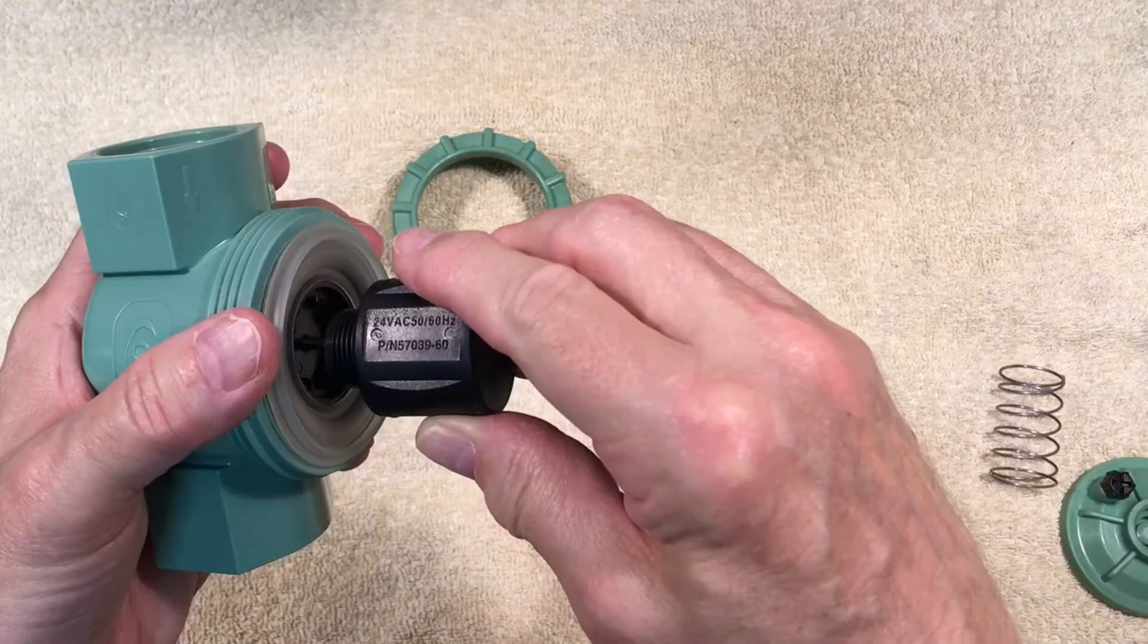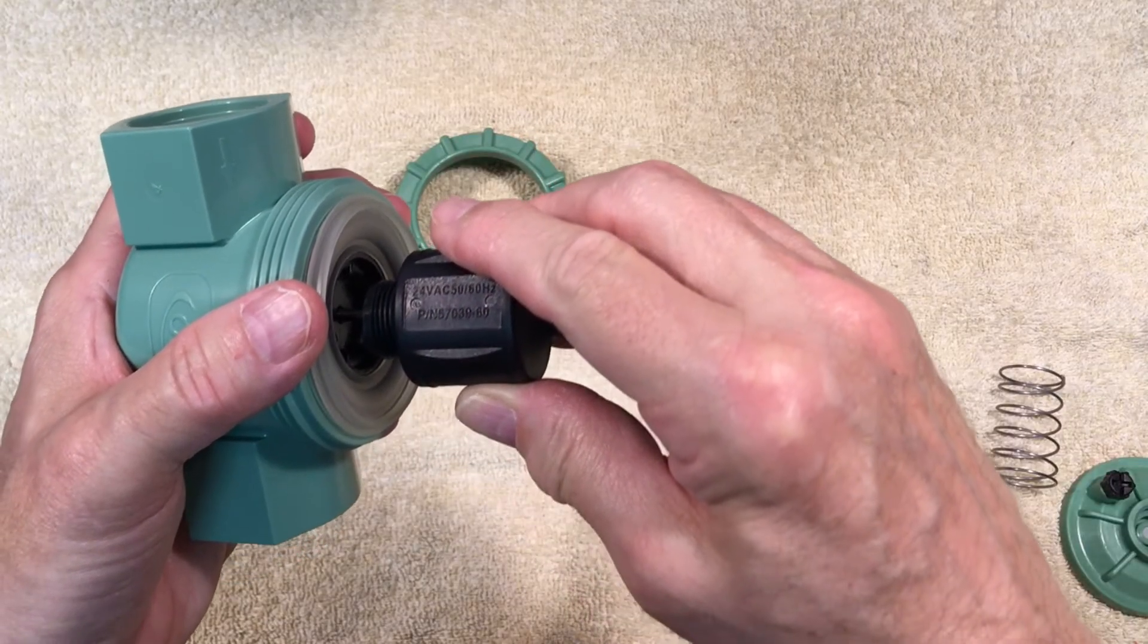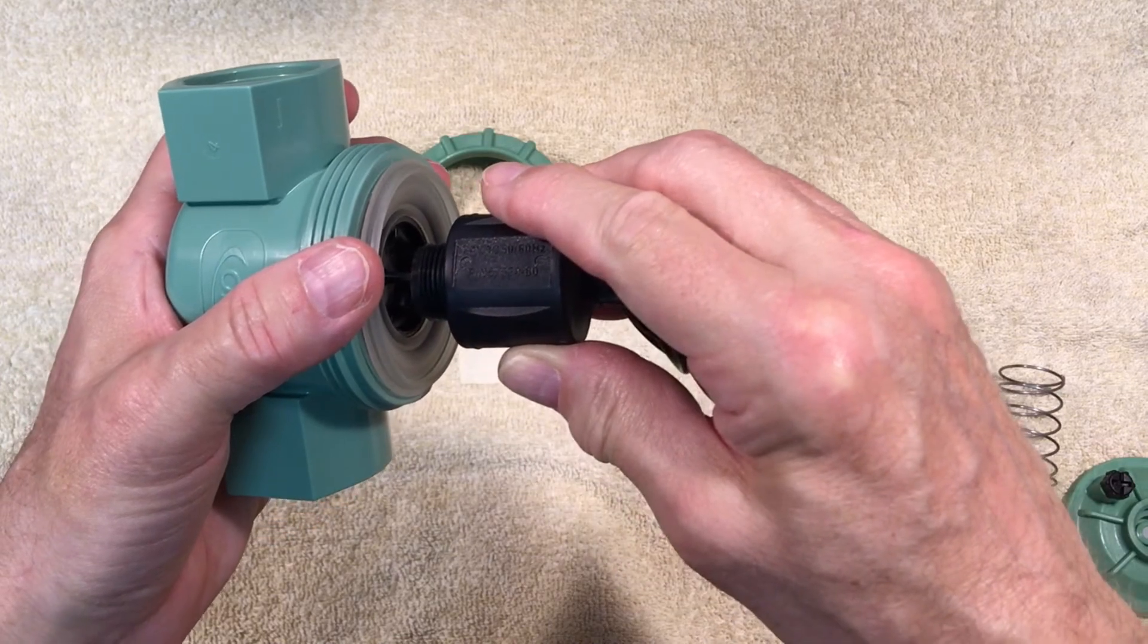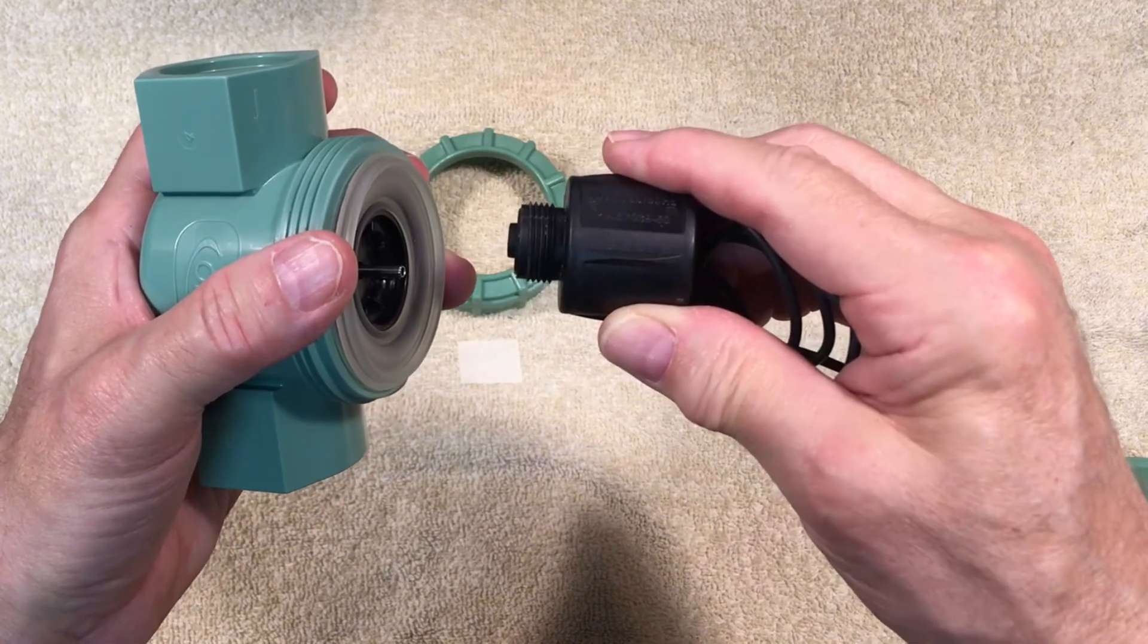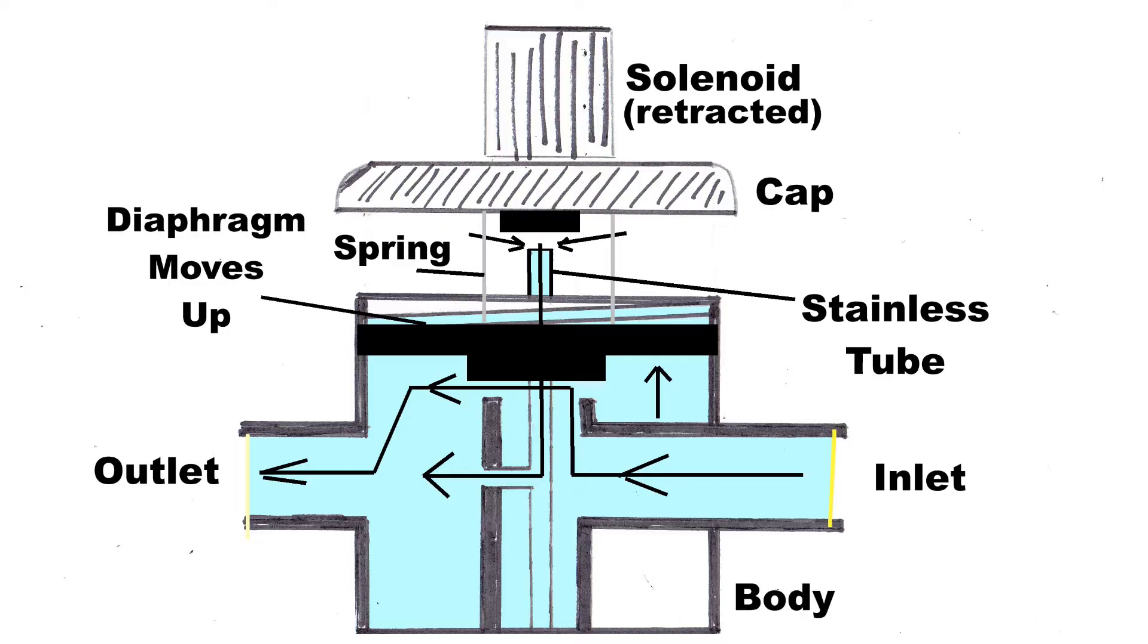When the solenoid is energized, the little rubber plug that was blocking the top of the stainless tube moves up out of the way. This allows the water under pressure in the top of the cap to flow out through the stainless steel tube, out the little square drain hole.